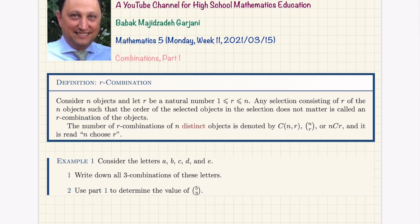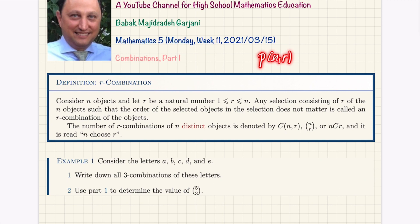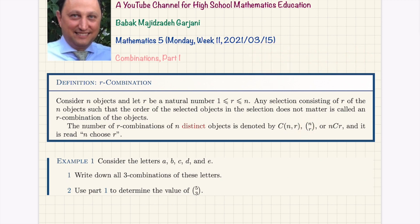The number of r-combinations of n distinct objects is denoted with several symbols. Permutation starts with P, and here we use capital C for combination. Calculators usually use one symbol, but the more popular symbol — which I always use — is 'n choose r', written as a binomial coefficient. For permutations one notation was more popular; for combinations, this binomial notation is most popular. It is read as 'n choose r'.